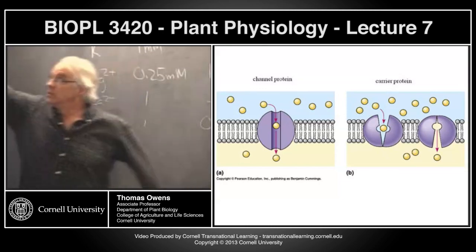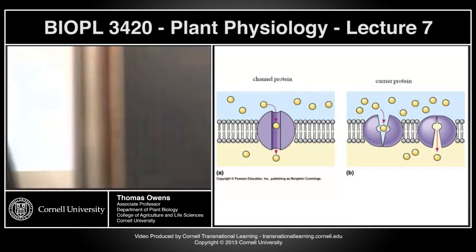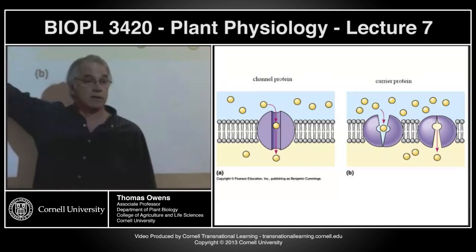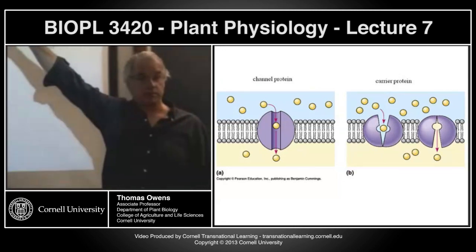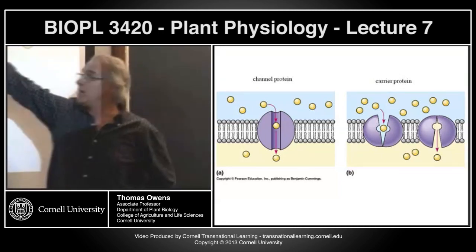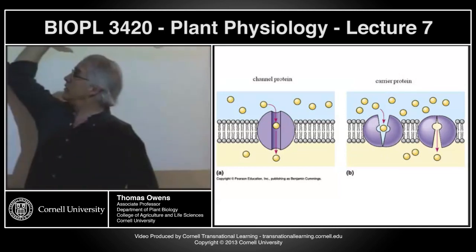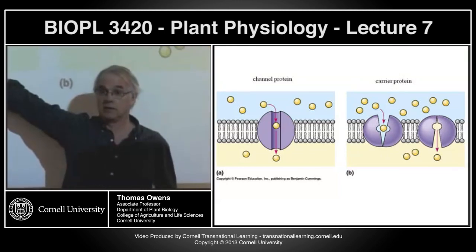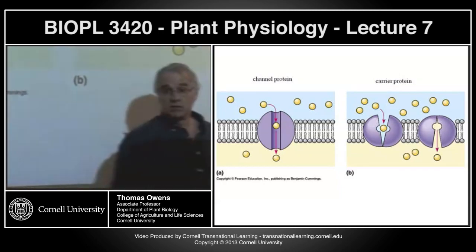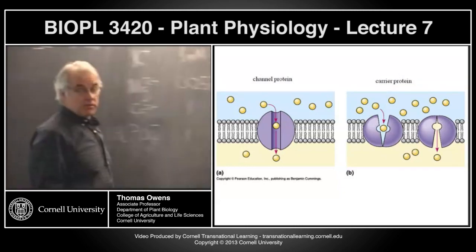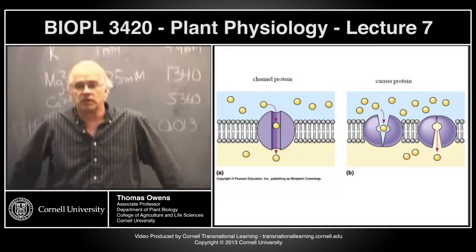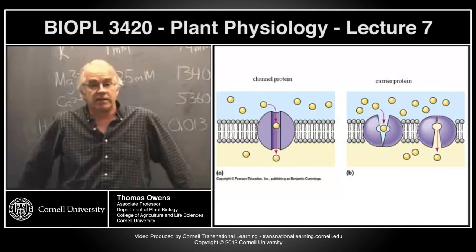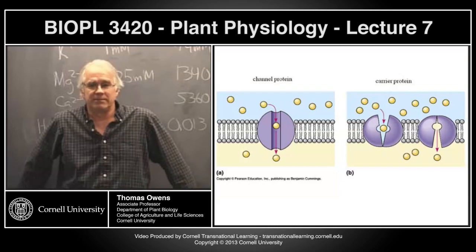In terms of specificity: carrier proteins are specific, just like enzymes. Channel proteins are also very specific. Some channels can be a little bit promiscuous — channels that let potassium through can let a little bit of sodium through, but not much.